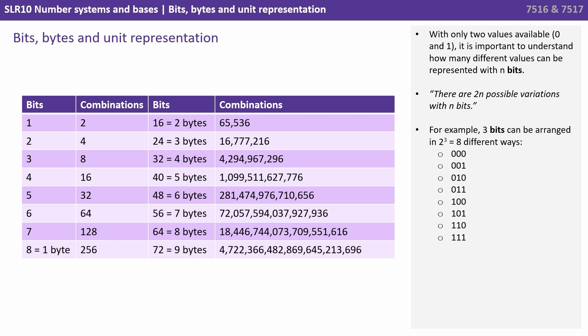So if we have four bits, there are 16 possible combinations. With five bits, we now have 32 possible ways of arranging these, and with six we have 64, and so on and so forth.